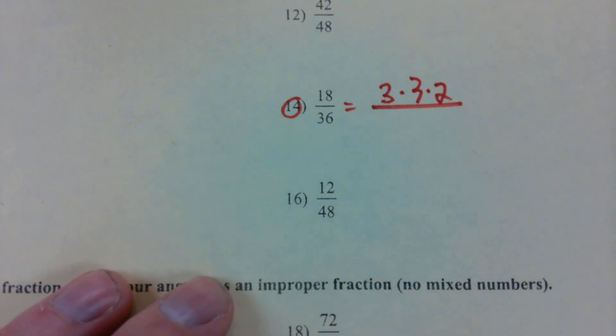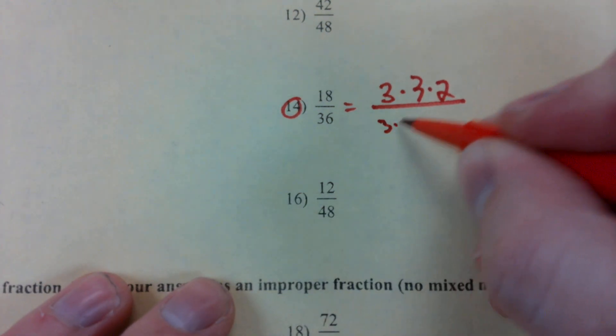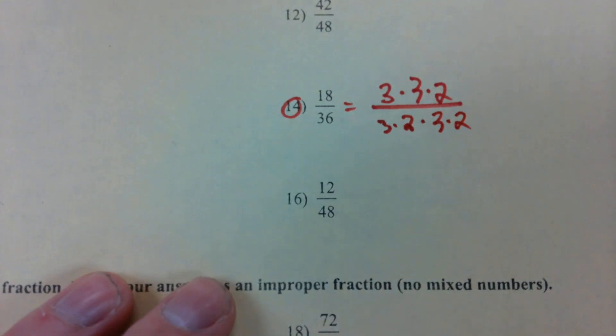What about thirty-six? Six and six. Six and six. So three times two times three times two. That gives us six times six. Give me a thumbs up if you see how I broke that down. Because there's a lot of threes and a lot of twos.